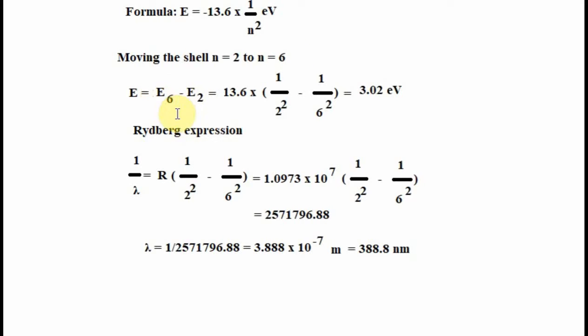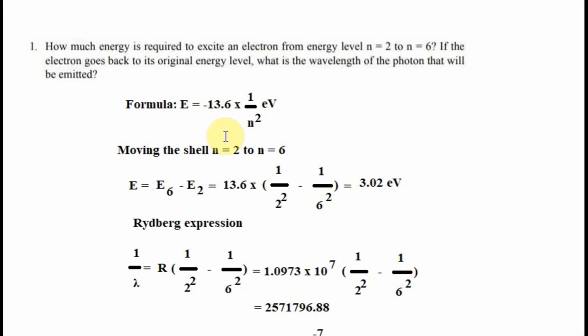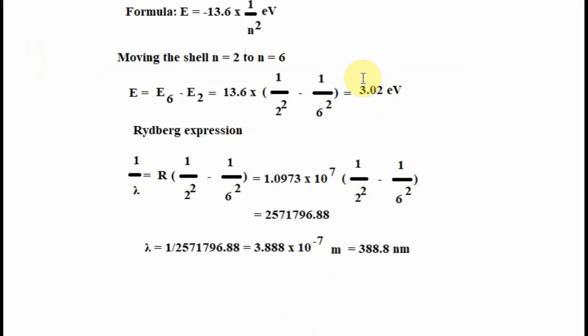We have E6 minus E2. So we input this inside the formula from the top. And we calculate it is about 3.02 eV.